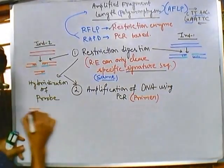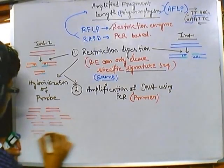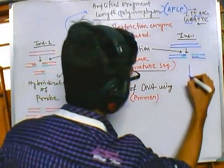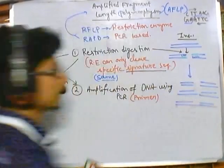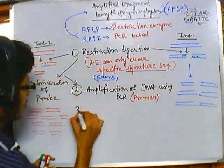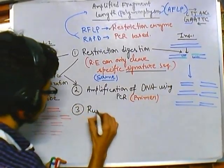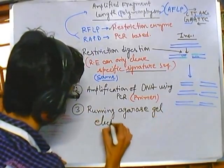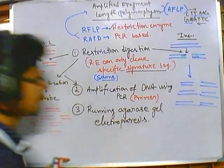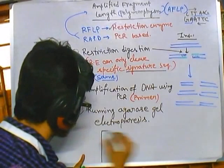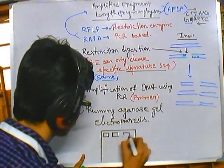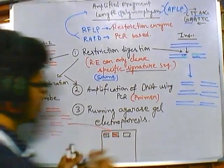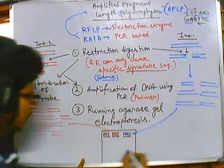After PCR amplification we get plenty of products from both individuals. We then proceed to the final step: we load our samples in agarose gel electrophoresis with a suitable marker.